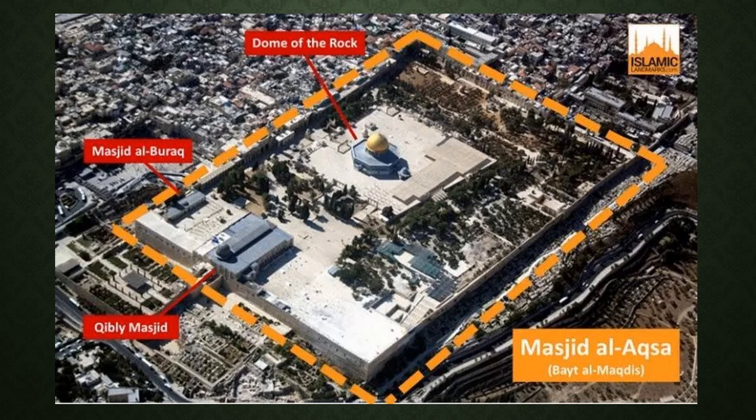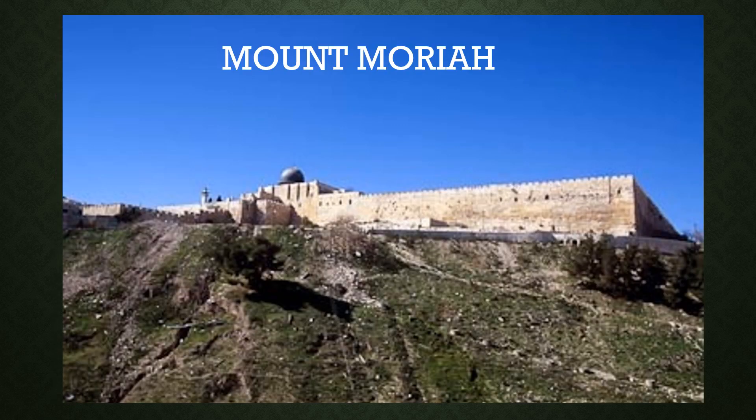It is situated on top of a hill, on a mountain called Mount Moriah within the Bible. It is identified today as the Temple Mount, and this view gives you an idea of how high up Masjid al-Aqsa is from the ground. It was built 40 years after the Kaaba.